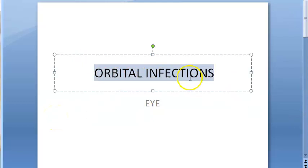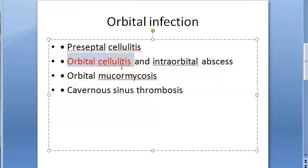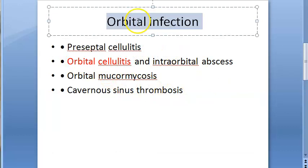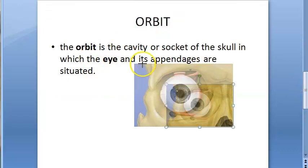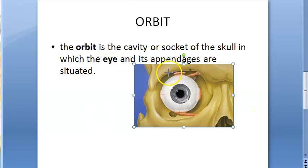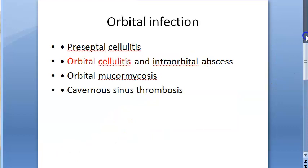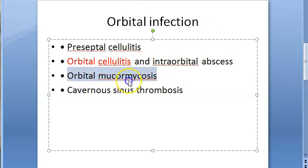In this video we want to specifically focus on a particular orbital infection called orbital cellulitis. This one is an emergency, so we need to understand it. The orbit is the cavity in the skull where the eye sits. Under orbital infections we have preseptal cellulitis, orbital cellulitis, orbital mucormycosis, and cavernous sinus thrombosis.